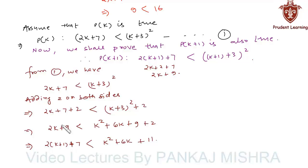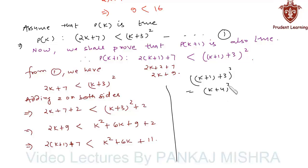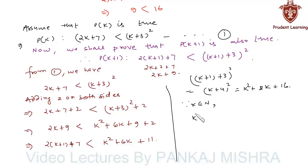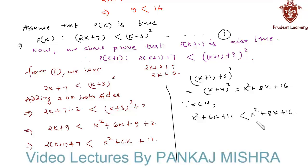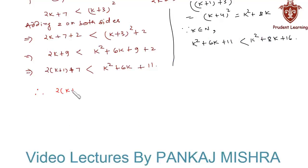Now we check whether the right hand side matches P(k plus 1). We have (k plus 1 plus 3) whole square, which equals (k plus 4) whole square, which equals k squared plus 8k plus 16. Since k is a natural number, k squared plus 6k plus 11 is less than k squared plus 8k plus 16. Therefore 2(k plus 1) plus 7 is less than k squared plus 6k plus 11, which is less than k squared plus 8k plus 16, so P(k plus 1) is true whenever P(k) is true.